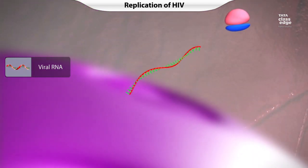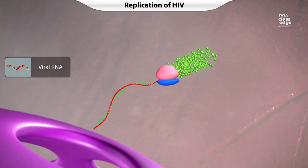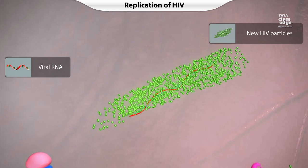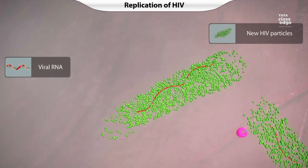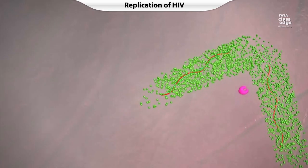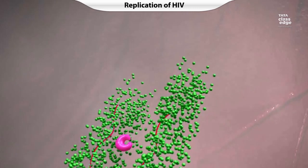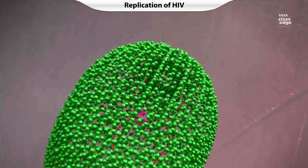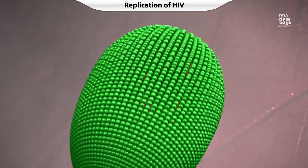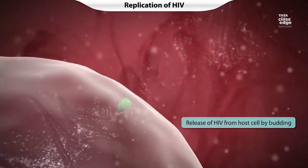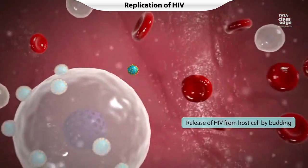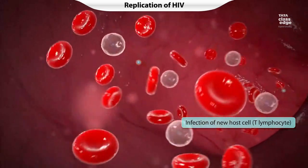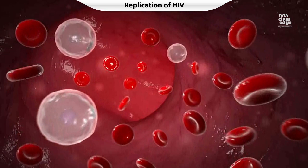This viral RNA is then translated to form viral protein. Viral RNA and proteins assemble to form new HIV particles. The new viruses are then released from the host cell by budding. These viruses then invade new host cells. This is how the HIV virus gradually destroys the host's immune system.